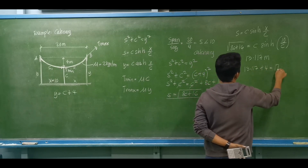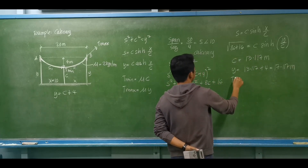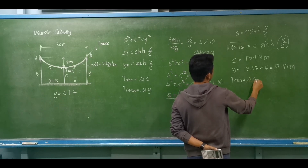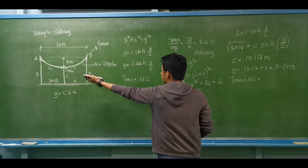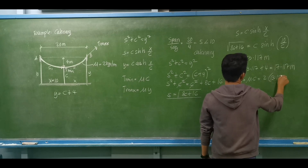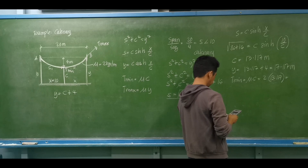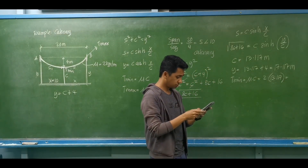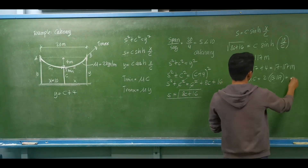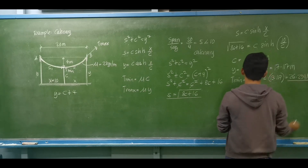Solving numerically, C is found to be 13.117 meters, and Y equals C plus 4, which gives Y equal to 17.117 meters. The minimum tension T-min equals μ times C, that is 2 kilograms per meter times 13.117, giving T-min equal to 26.234 kilograms.